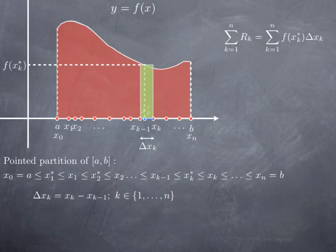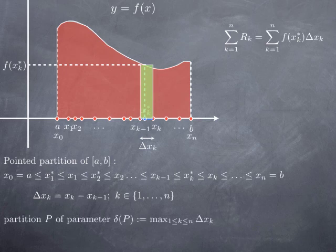For a pointed partition, I'm going to give a name to the partition, call it p. A given partition p has a parameter that I will denote δ(p), and this parameter is simply the maximum width of the subintervals. So I look at the widths of subintervals, which are these Δx_k, and I take the largest of them.